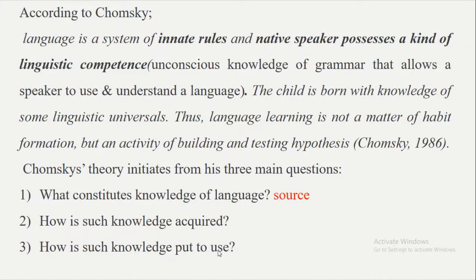The third question is: how is such knowledge put to use? It is not only about language competence but also language performance — how to use words, how to put sentences into correct grammatical form, and how to use language at a specific situation contextually. These are the three main questions that initiated the theory of Transformational Generative Grammar by Noam Chomsky.